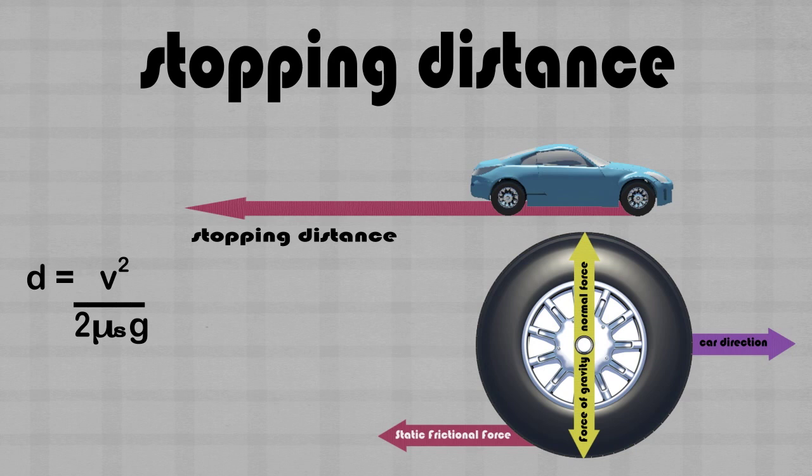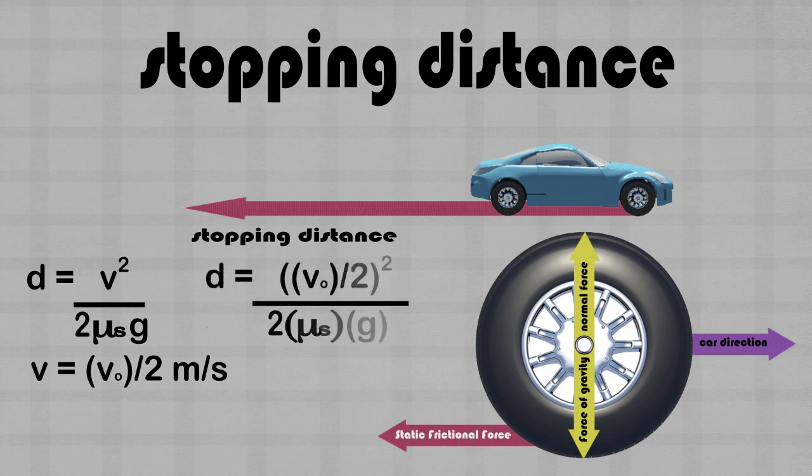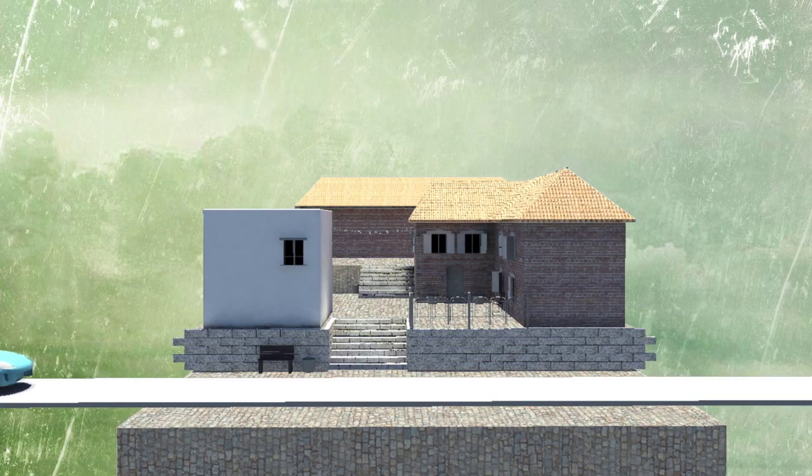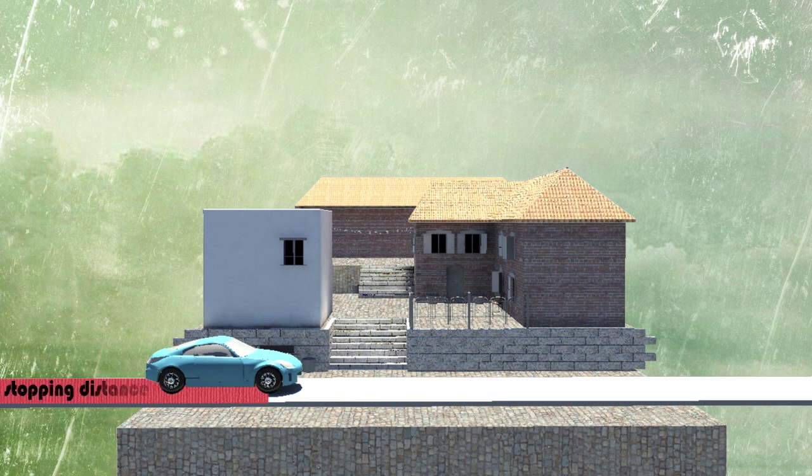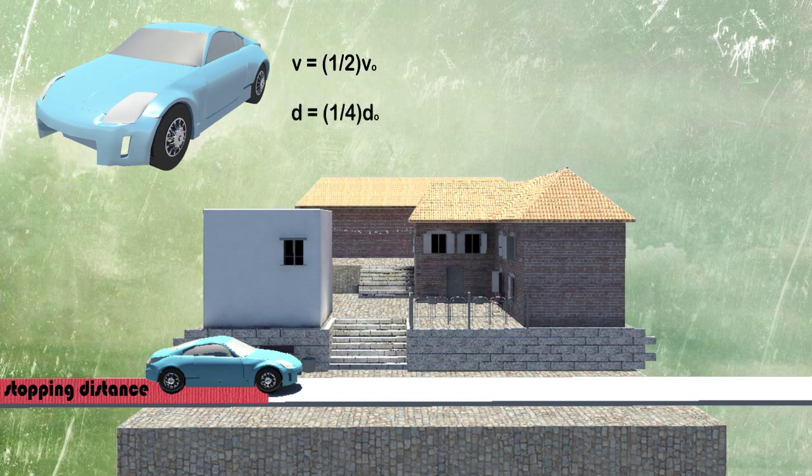Let's run through the equation again, but this time we will see what the stopping distance is when our car is traveling at half the original speed. We find that the distance is a quarter of the original stopping distance. So when the velocity is halved, the distance is only a quarter of what it originally was.